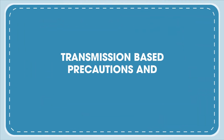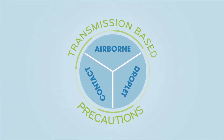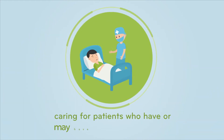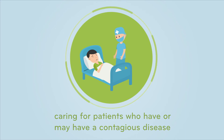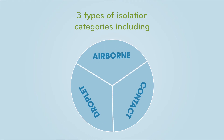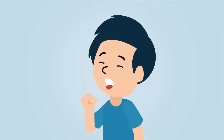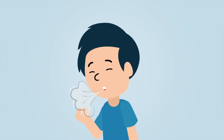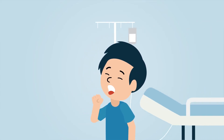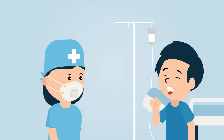Transmission-Based Precautions and Isolation Categories. Transmission-based precautions are used in addition to standard precautions when caring for patients who have or may have a contagious disease. There are three types of isolation categories. First, airborne isolation is used when a patient is infected with a disease caused by small airborne droplets, such as TB. These patients are typically held in a specialized negative air pressurized room, and staff are required to use a respirator.